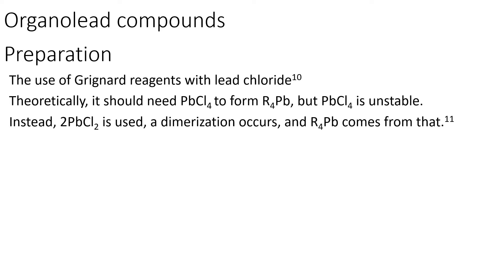The preparation of organo-lead compounds is relatively simple. You simply mix a Grignard reagent with lead chloride. Theoretically, you should need to use lead tetrachloride to form your tetraalkyl lead compound. But due to the fact that lead tetrachloride is incredibly unstable, it would be unviable as a method for making these organo-lead compounds.